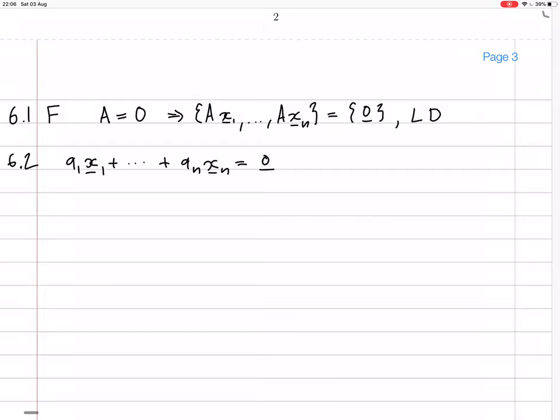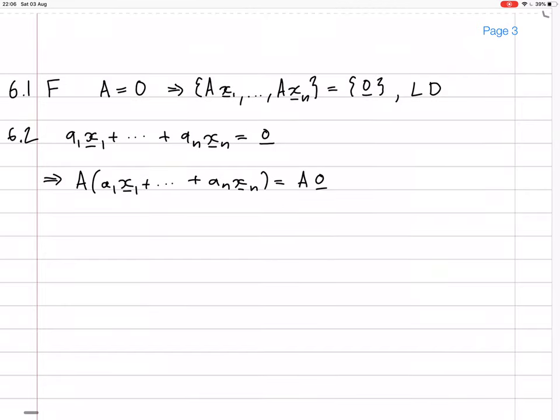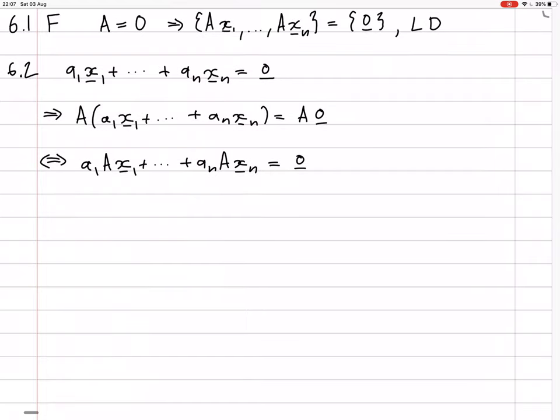And that implies that A times the matrix A times both sides equals... whatever. That equation's true. That's the same as if you bring the matrix A into the addition and multiplication because matrix multiplication is linear and A times a zero vector is just a zero vector